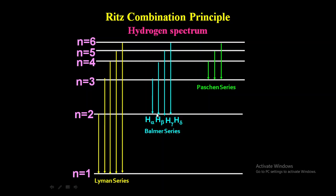How to distinguish these series: if the transition is from a higher energy level to the energy level n equal to 1, that is nothing but the Lyman series. If the transition happens from n equal to 2 to n equal to 1, that is the H-alpha line, H-beta, H-gamma, H-delta.